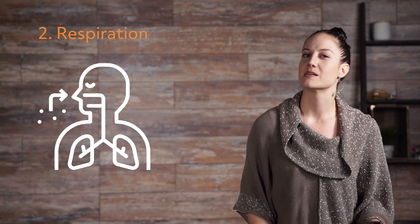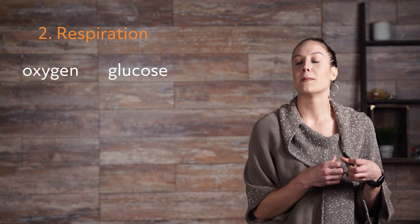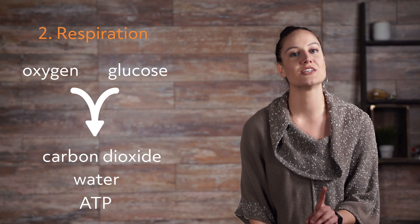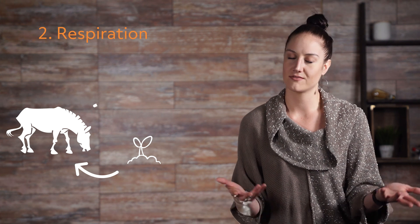2. Respiration. Now, we need to be sure not to confuse respiration with breathing. Breathing is the more physical process, where we inhale oxygen and exhale carbon dioxide. Respiration is a more chemical process; however, breathing is very important for respiration to take place. Respiration is when oxygen and glucose combine to produce carbon dioxide, water, and ATP. Something interesting to note is that autotrophs, or an organism that is photosynthesizing, are dependent on heterotrophs — organisms that are not photosynthesizing, like humans — and vice versa.